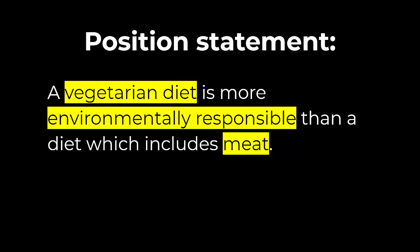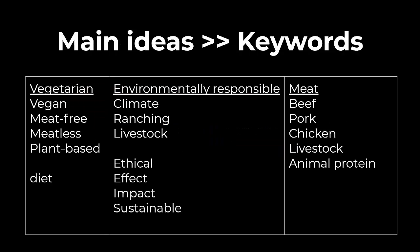For example, with the position statement 'A vegetarian diet is more environmentally responsible than a diet which includes meat,' the phrase 'vegetarian diet' means something specific. Being 'environmentally responsible' is an important idea to investigate, and 'meat' represents the contrasting element. We can then generate additional keywords — synonyms for vegetarian, related words for environmentally responsible, and more specific terms like beef, pork, chicken, livestock, or animal protein.